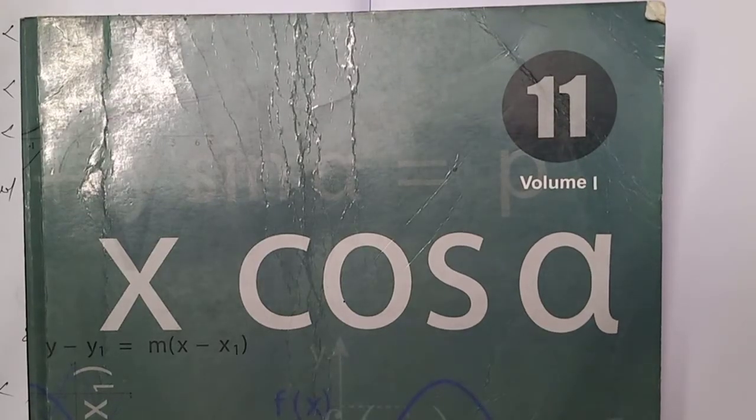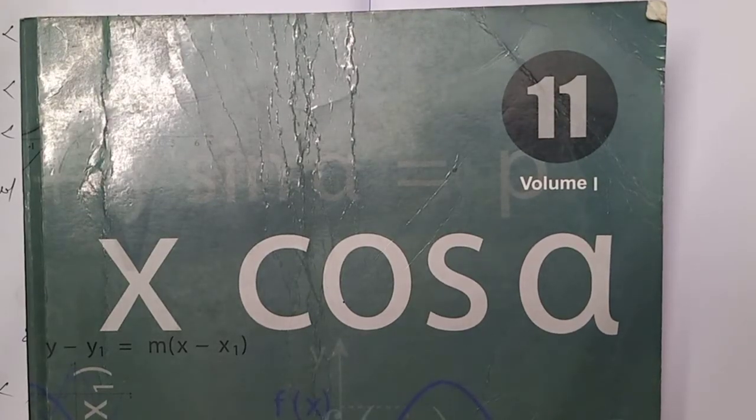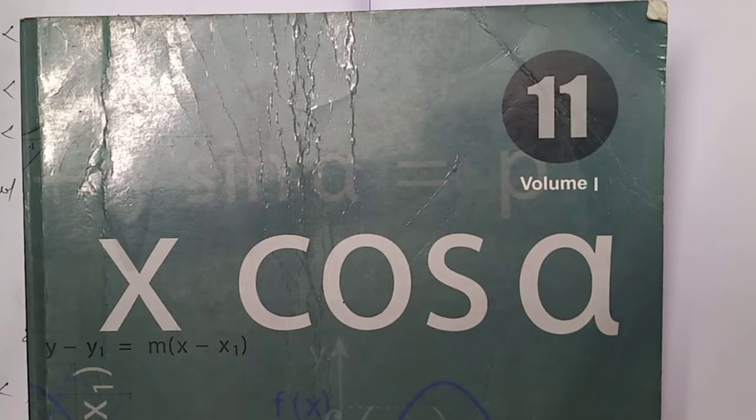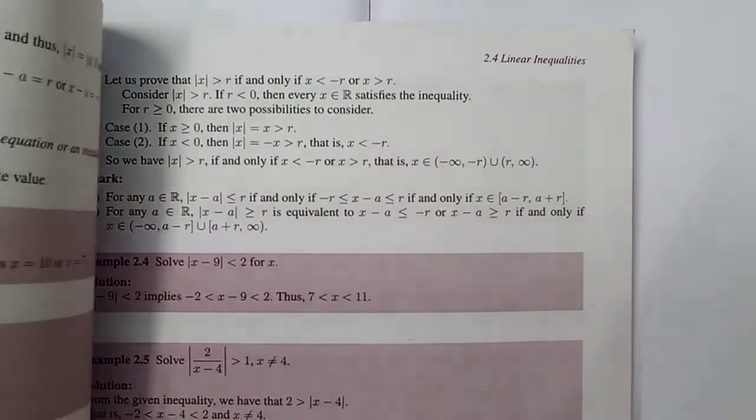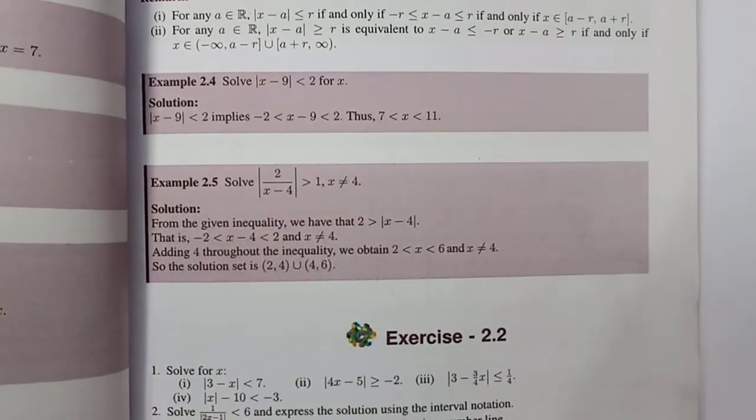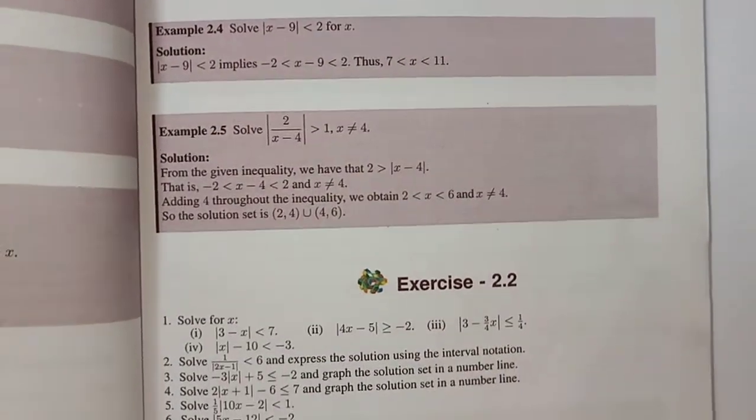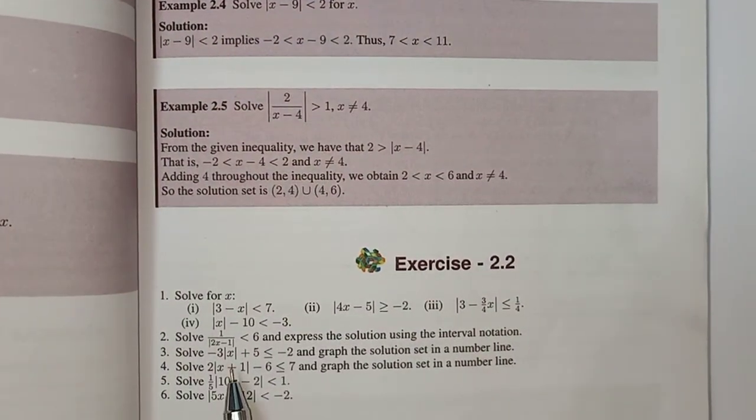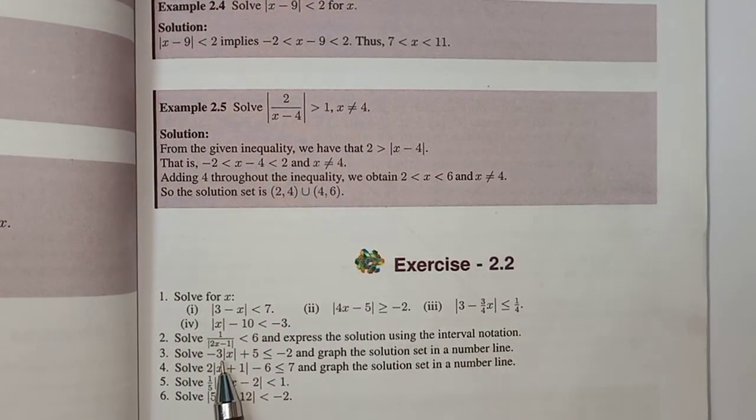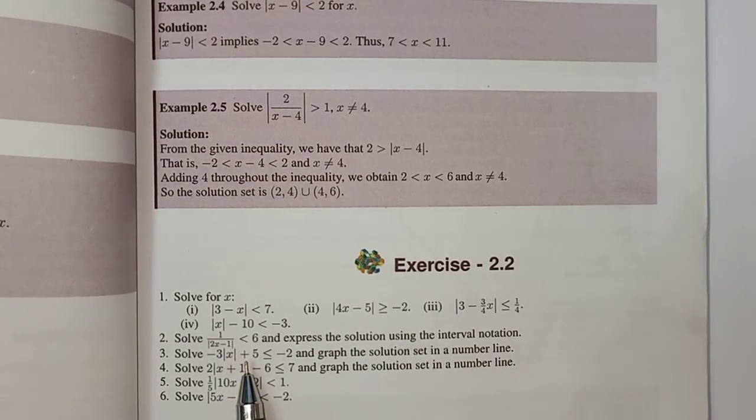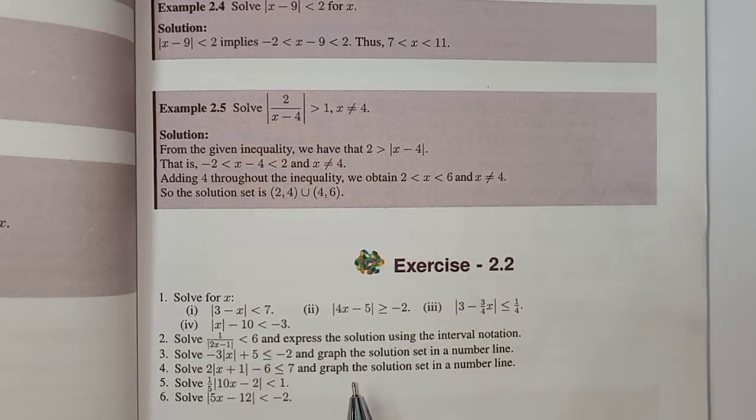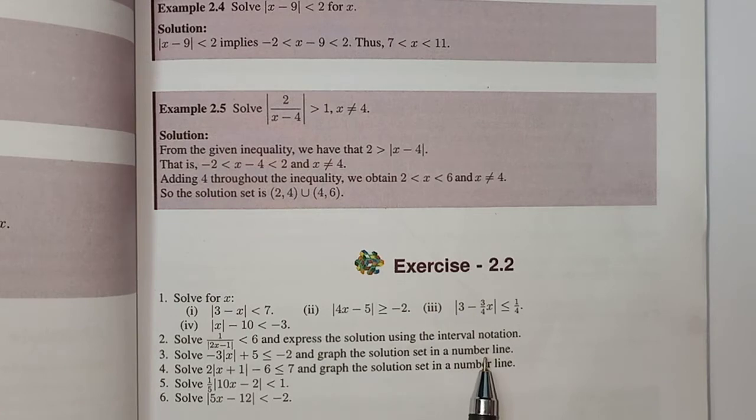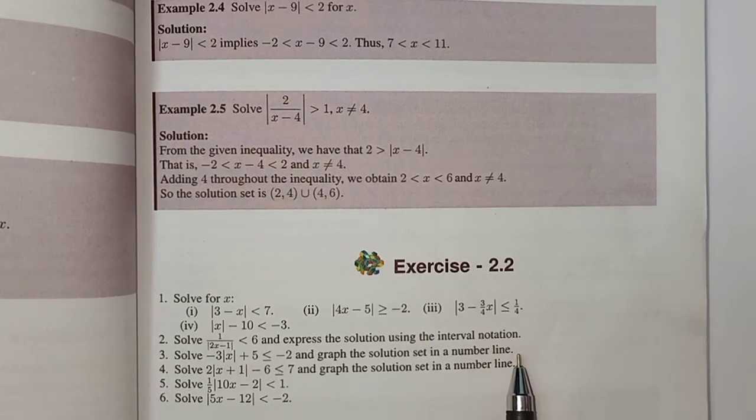Hi students, this is Sivakumar. 11th standard mathematics chapter 2, continuation of exercise 2.2. Now problem number 2: solve 1 divided by modulus of 2x minus 1 which is less than 6 and express the solution using the interval notation.